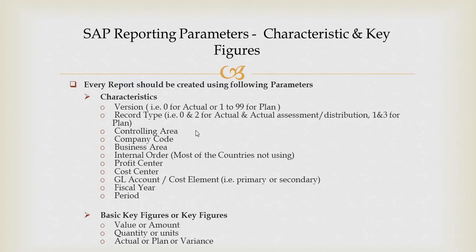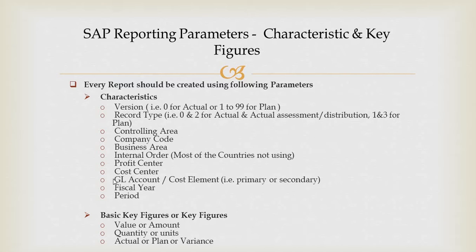Here are some of the standard SAP characteristics: version, record type, controlling area, company code, business area, internal order, profit center, cost center, GL account. The period dimension is a physical layer, and we also have period.